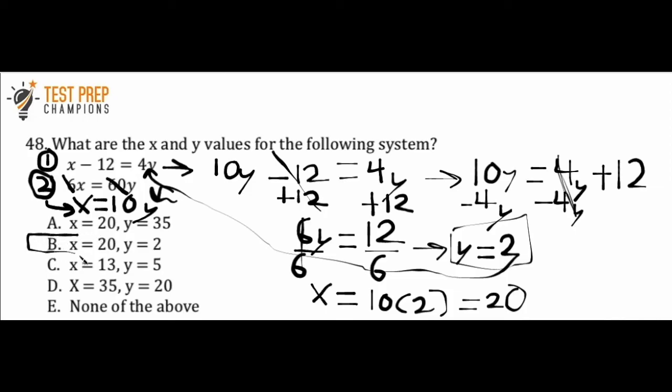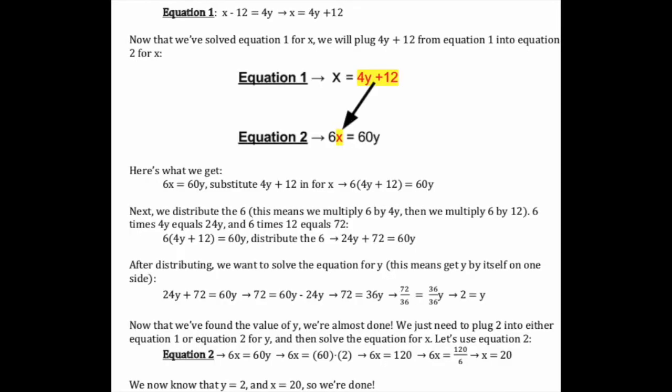So the correct answer here is B, x equals 20, y equals 2. So this written solution actually shows a slightly different way to do the problem than what I showed you, but it's a very similar concept. You can pause the video, take all the time you need to study this, and then when you're ready, we'll go to the next question.